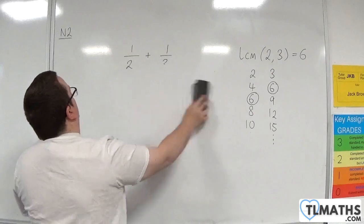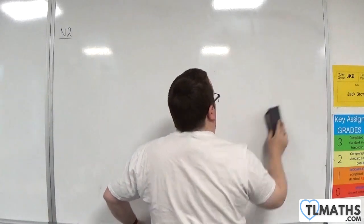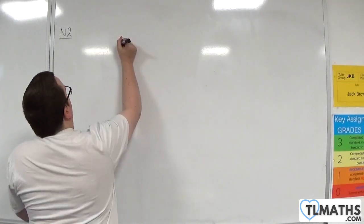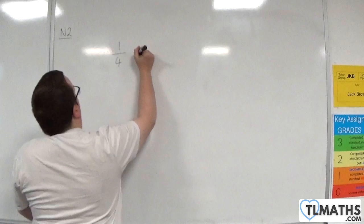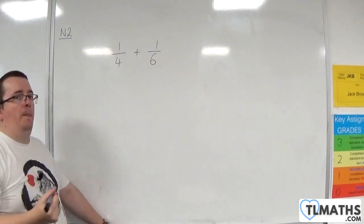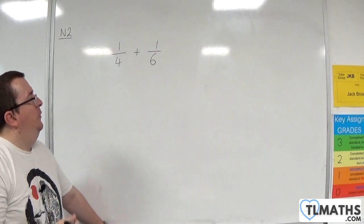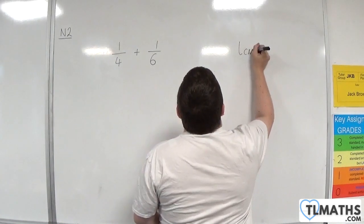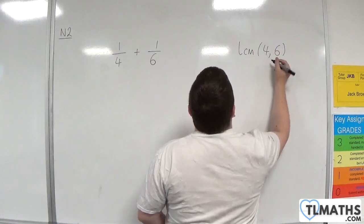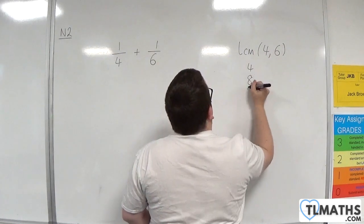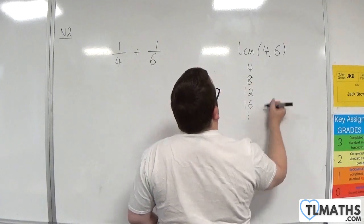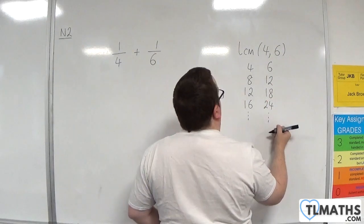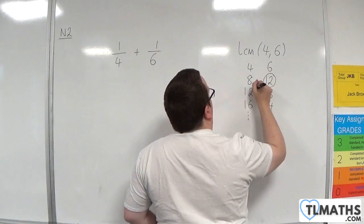So let's say I've got 1 quarter plus 1 sixth. So if we do it the first method first, we look for the lowest common multiple of 4 and 6. So 4, 8, 12, 16, etc. 6, 12, 18, 24, etc. So the lowest common multiple is 12.